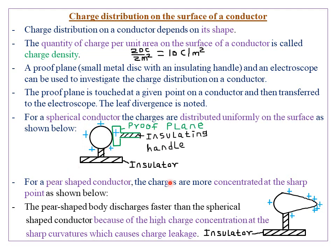For a pear-shaped conductor, the charges are more concentrated at the sharp points. One side of a pear shape is very sharp, so the charge density at that sharp point will be very high. You can see the charges are more concentrated at the sharp point, but at the areas which are not very sharp, the charges are sparsely distributed and far away from each other.